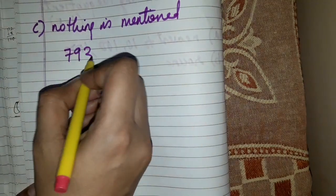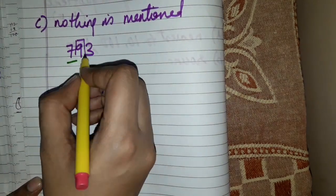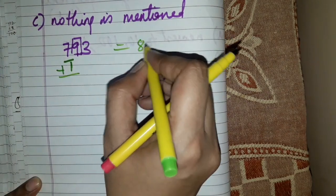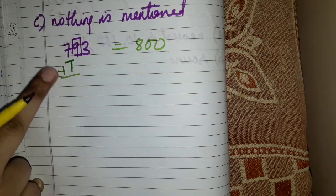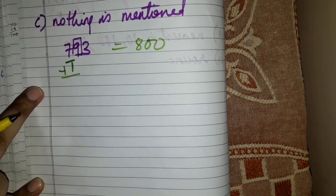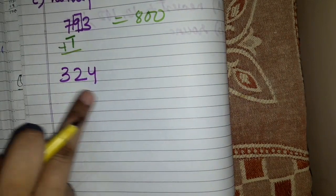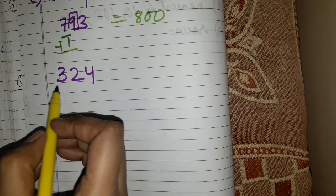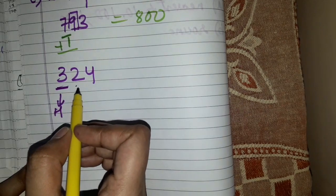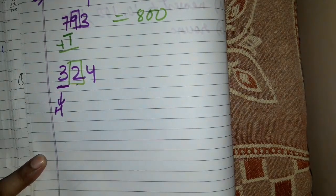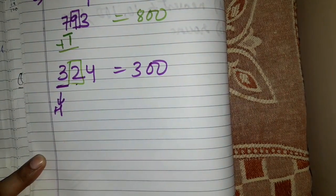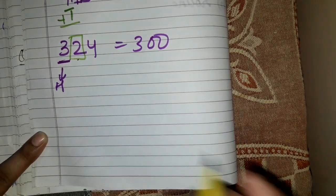Suppose a number is given in hundreds. I will consider that I have to round off to the nearest hundreds place value. If the digit on the right-hand side is 9, which is more than 5, it gives plus 1 to the hundreds digit — and the answer becomes, for example, 800. Another case: 324 — the digit on the right is 2, less than 5, so it rounds to 300.